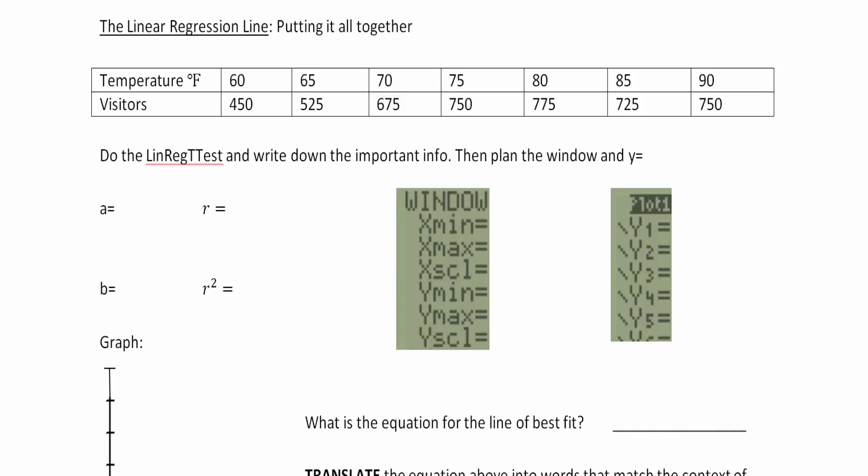We're going to review the scatter plot and graphing rules and how to adjust and fix your window. We are also going to look at the values of a, b, r, and r squared, otherwise known as the y-intercept, the slope, the correlation coefficient, and the coefficient of determination.